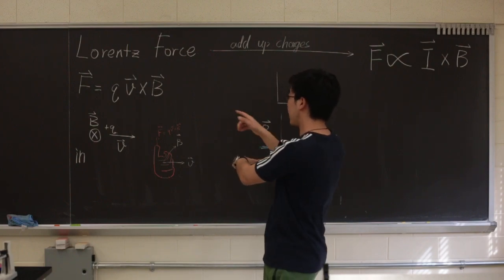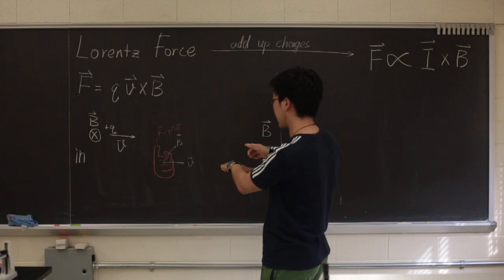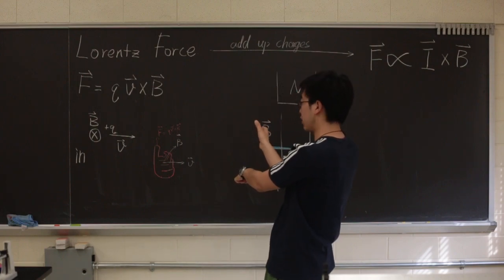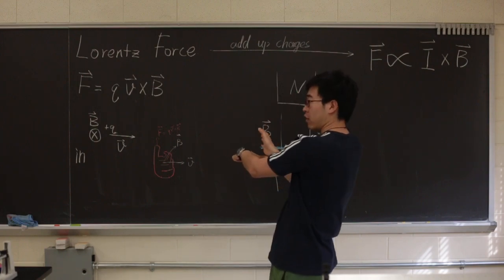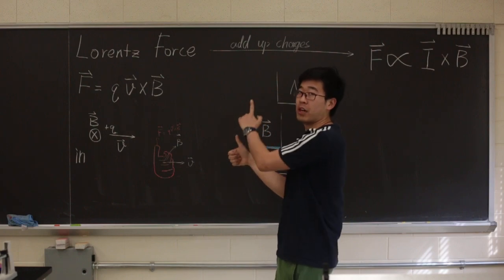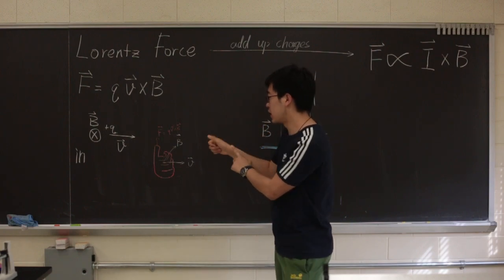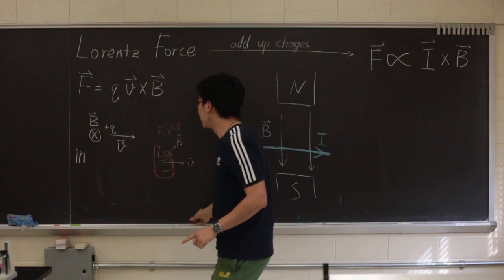So first, across the first vector V, and across the second vector using the four fingers, V cross B, and your thumb will be the orientation of the force, which is going to be this way.